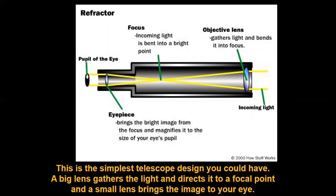In the simplest telescope design, a big objective lens gathers light and directs it to a focal point, and a small eyepiece lens brings the image to your eye. The objective lens is larger than the eyepiece lens. When we have a bigger objective lens, the magnification and light-gathering power increases.